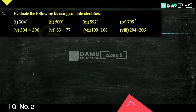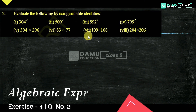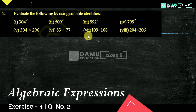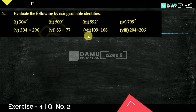Hello viewers, thanks for watching our videos. If you have not yet subscribed, please subscribe. In our second question, the last question in this exercise, we evaluate the following by using suitable identities. Identities are nothing but formulas and algebraic expressions, like (a+b)², (a-b)², (a+b)(a-b), and (x+a)(x+b). These four are the primitive formulas we have to learn.